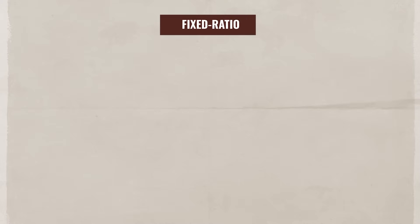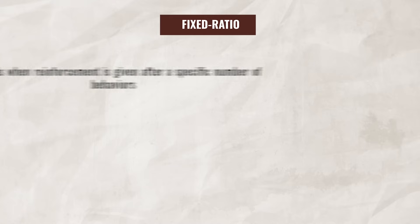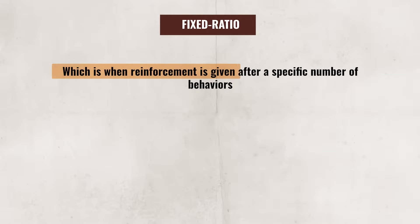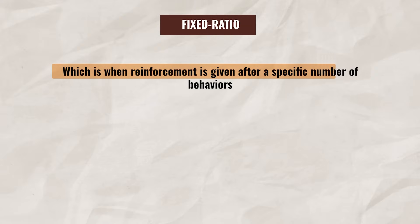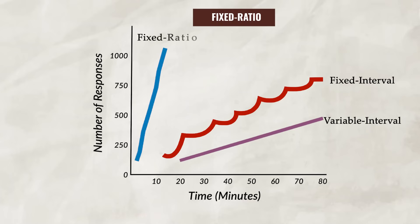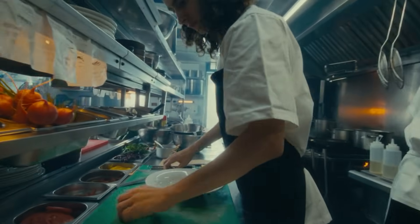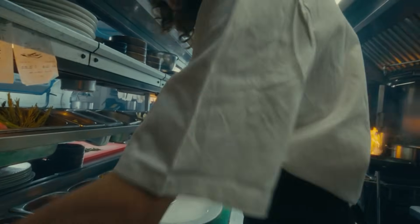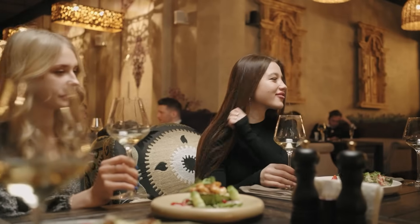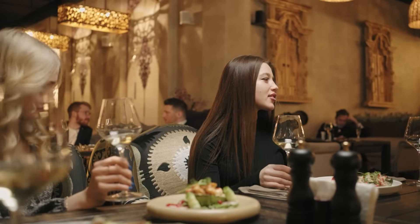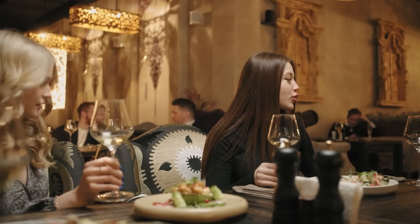Up next, we have fixed ratio, which is when reinforcement is given after a specific number of behaviors. This often produces a high response rate, with a short pause after the reward. For example, many restaurants have a reward program that gives you a free meal or side after you eat at their restaurant a certain number of times, which often motivates people to come back.